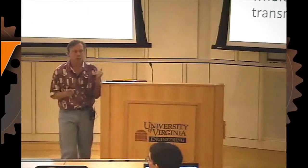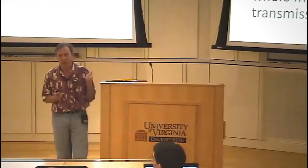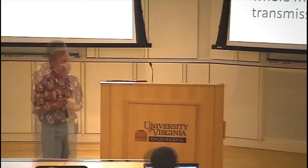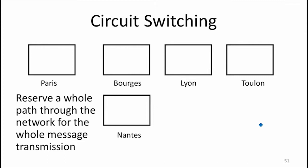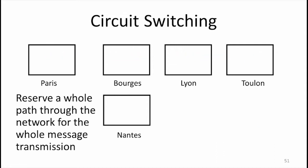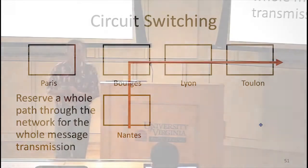The last thing I want to talk about that affects both latency and bandwidth is how you do switching on your network. The traditional phone network worked using circuit switching, where when you connect two points, you make a reservation. So Napoleon would reserve the path from Paris to Toulon, and no one else could use any of the links along that path until he was done. If you wanted to send a message from Nantes to Toulon, you'd have to wait until Napoleon's message was done — so this is not using your resources efficiently.